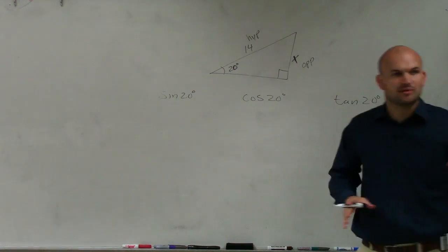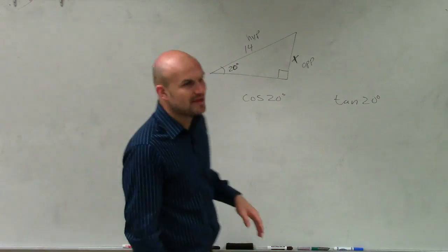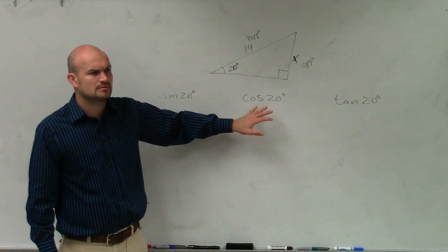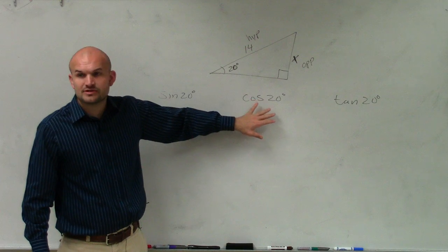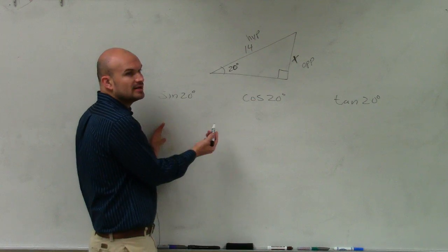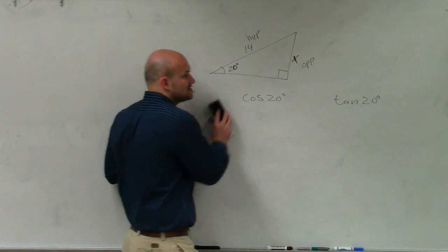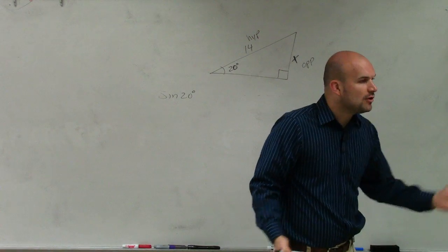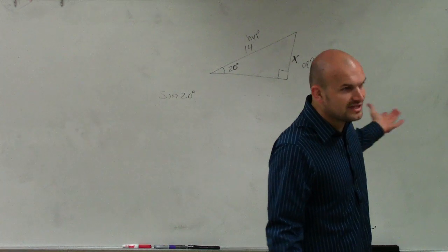I probably could have said it in a better way to help you out. But what I want you guys to understand is I can only use one of these functions. So I'm not going to use cosine or tangent, because cosine and tangent, AJ, they both use the adjacent side, and we don't have the adjacent side.